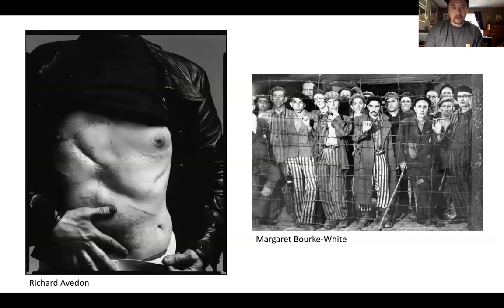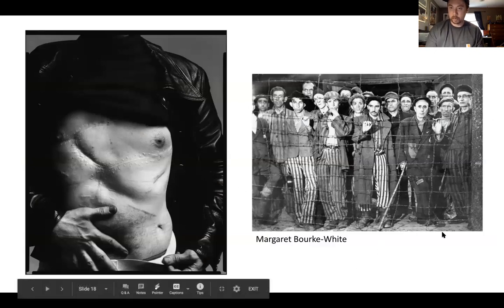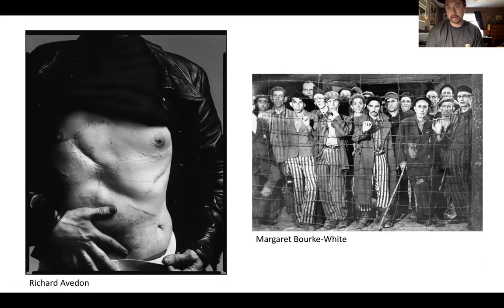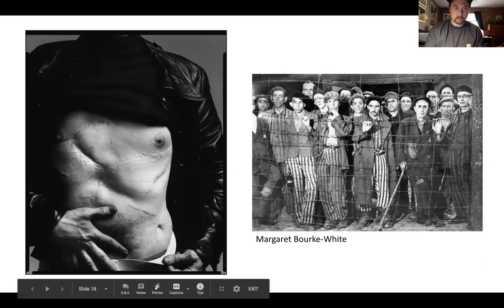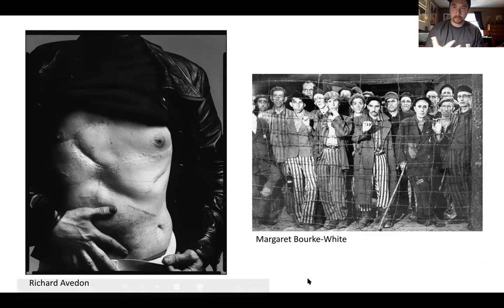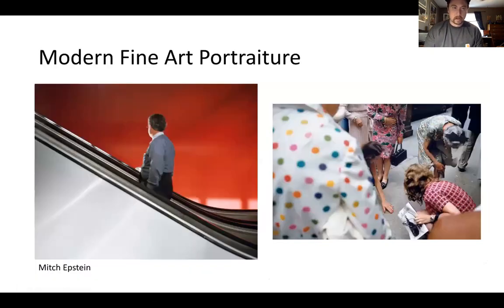We have Avedon showing Andy Warhol after he had been shot, displaying the horrific scarring from his surgery. Then Margaret Bourke-White again, showing a concentration camp and individuals being released in the 1940s. A portrait doesn't always have to show a face — it can be hands, other parts of the body, getting really close or further away. What are we trying to say about the image?